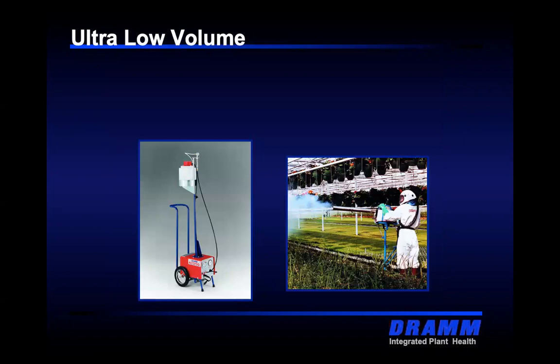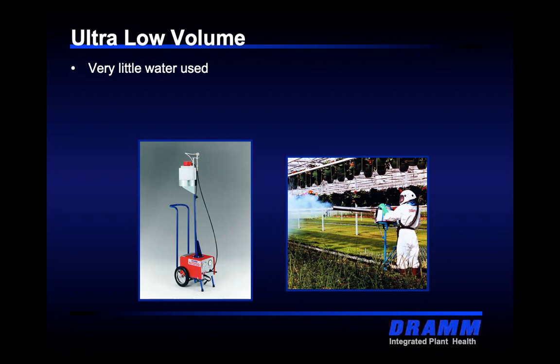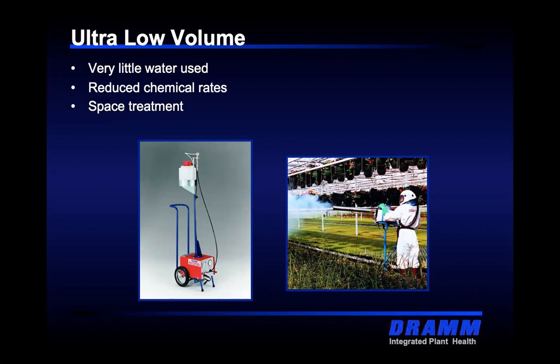Our last category based on particle size is ultra-low volume — machines like the autofog and pulsefog. Where you might use 10, 15, or 20 gallons of water for 10,000 square feet of spraying, we're using about 64 to 128 ounces — less than a gallon of water per 10,000 square feet — because we're using 5-to-10 micron particles. We can assist with reduced-rate chemical conversions. The big difference from targeted low-volume and hydraulic is that these treat the entire space.